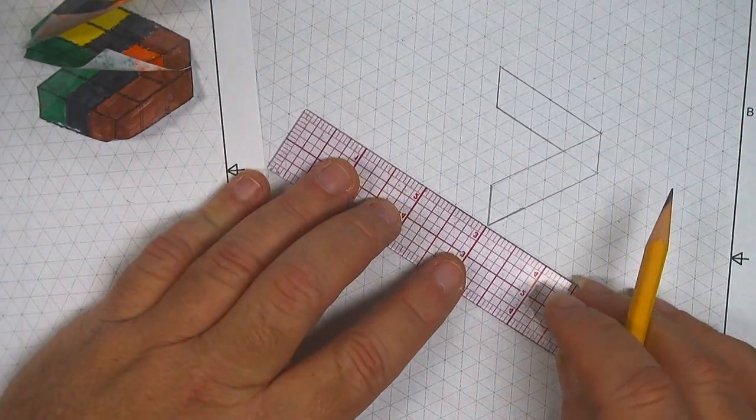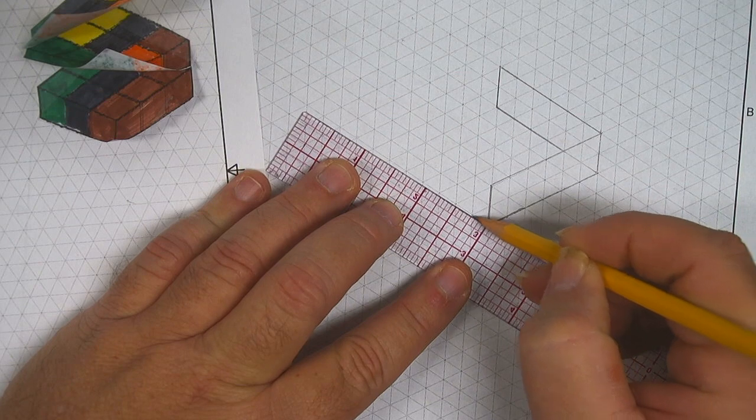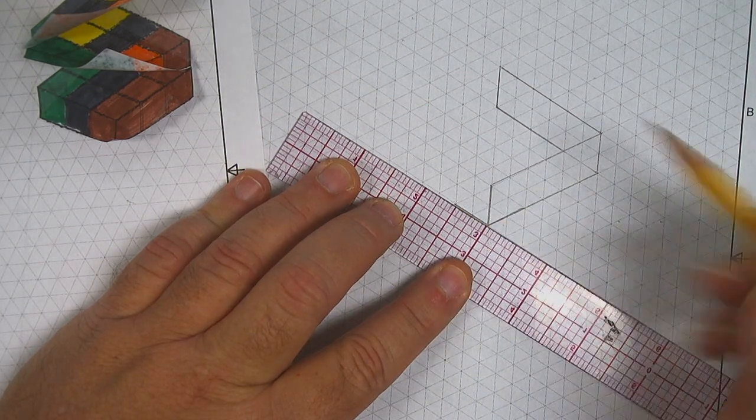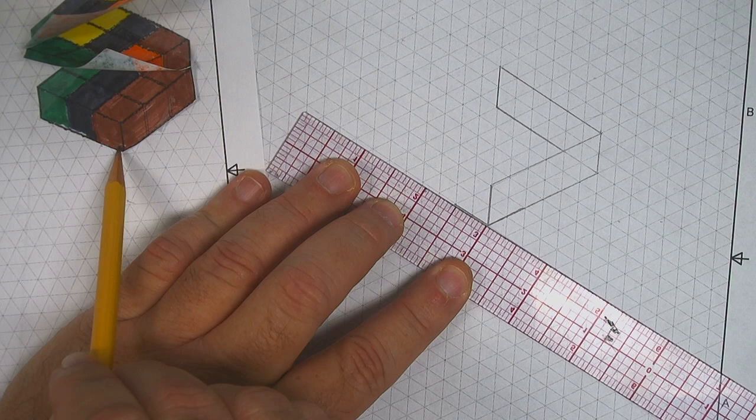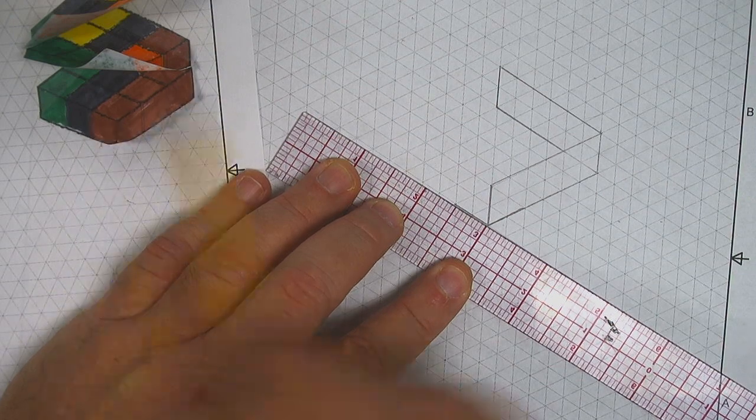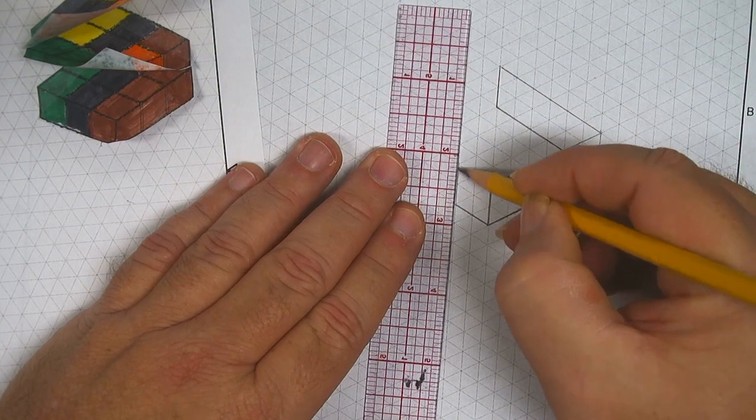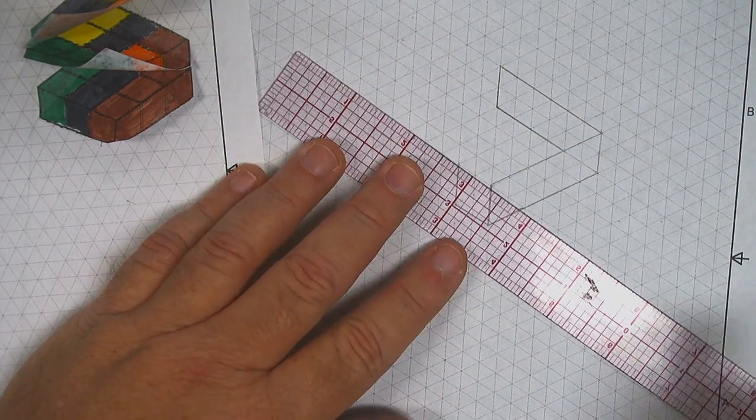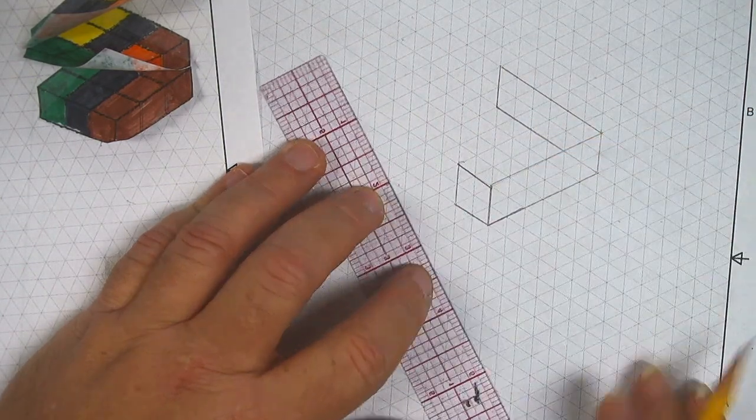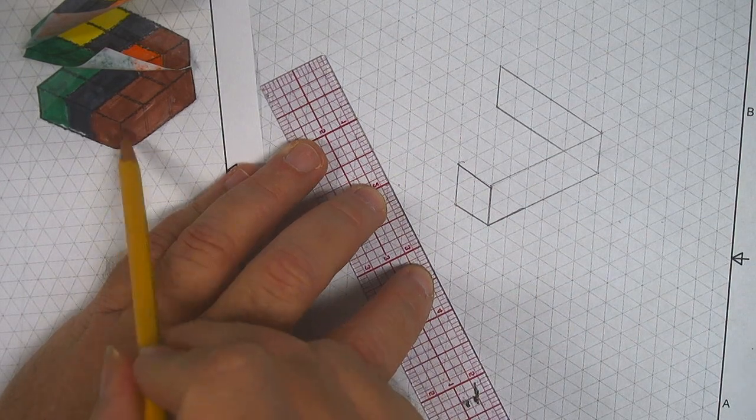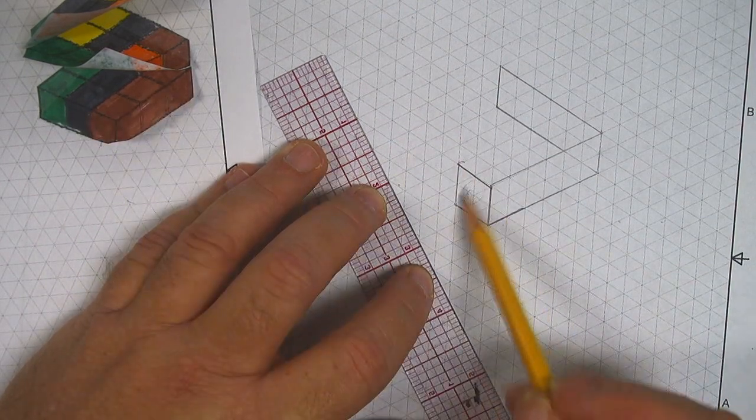So now I want to get the depth of my piece. The depth of my piece is just one cube deep. All right, and this is the line that I just drew. Now I want to draw this back edge here, and then the top edge here. So now we see that part of the cube right here.